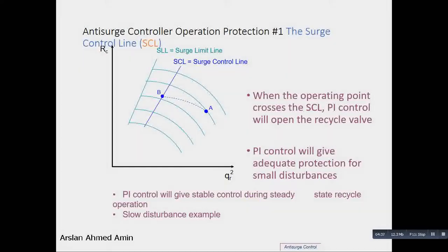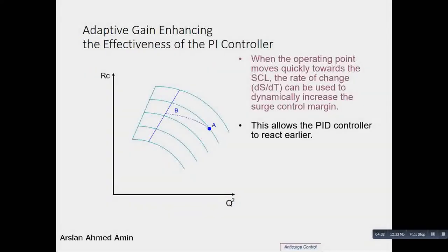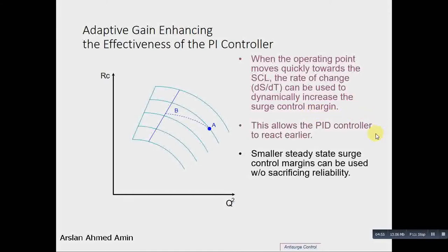But what if the surge comes very fast? When the operating point moves quickly towards the surge control line, the rate of change can be used to dynamically increase the surge control margin. This allows the PI controller to react earlier. Smaller static surge control margins can be used without sacrificing reliability.